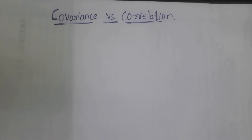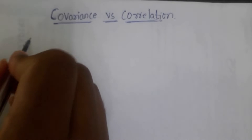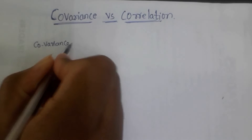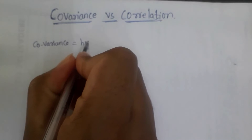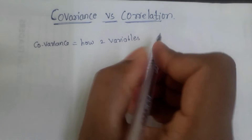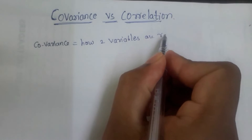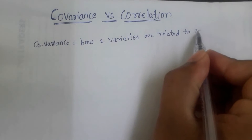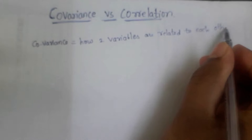In this video, we will tell you what covariance and correlation is. First of all, we will tell you what covariance is — how two variables are related to each other. This is the basic covariance definition.